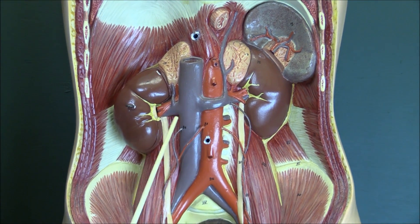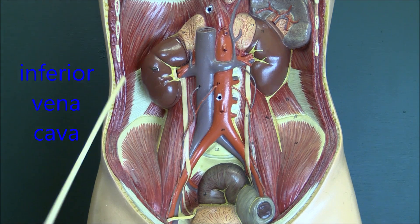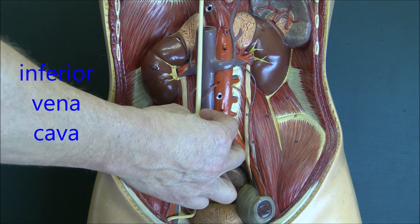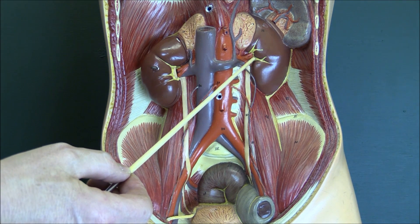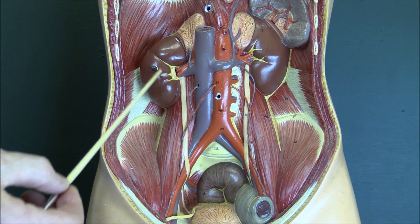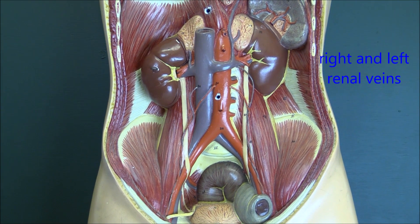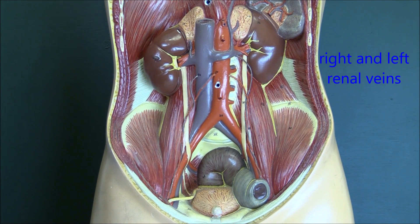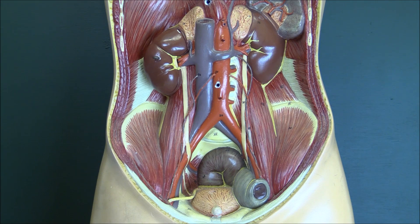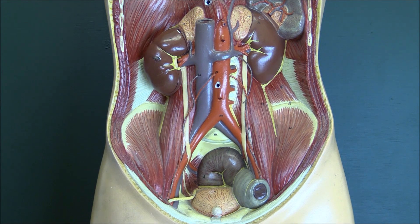We also notice this large venous vessel in the abdomen — the inferior vena cava — carrying blood back up towards the right atrium. There's a large vein leaving each kidney feeding directly back into the inferior vena cava; on the right side, a large renal vein drains blood directly back into the inferior vena cava. The kidneys have a very large blood supply — in fact, probably 20 to 25% of cardiac output goes to the kidneys, even though they're relatively small organs.